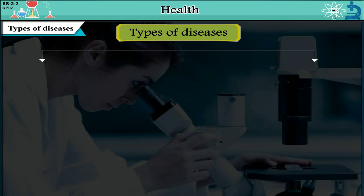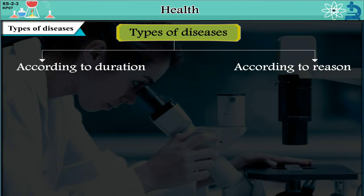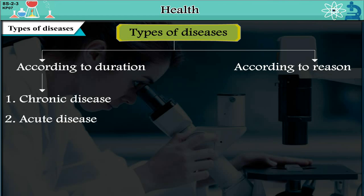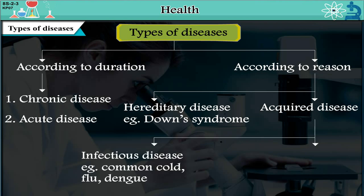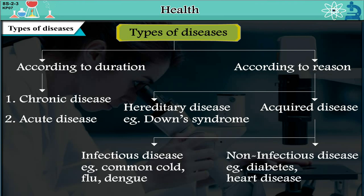Types of diseases are classified according to duration and according to reasons. According to duration, there can be: 1. Chronic disease or 2. Acute disease. According to reason, there are hereditary diseases — example, Down syndrome — or acquired diseases, which may be infectious diseases — example, common cold, flu or dengue — or non-infectious diseases — example, diabetes, heart diseases.